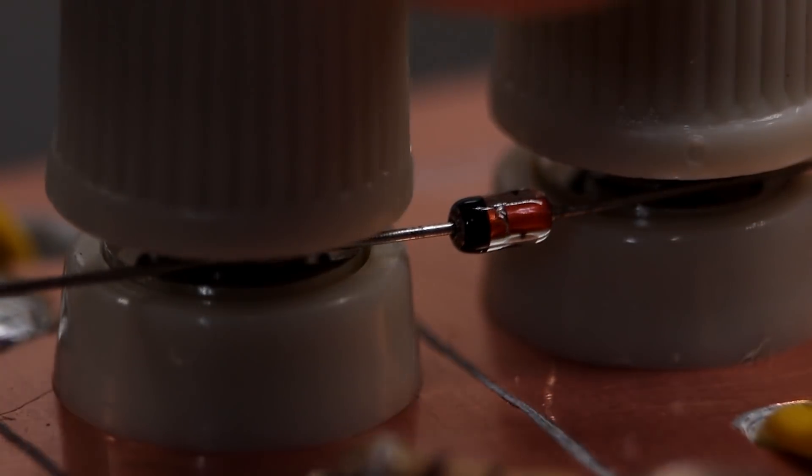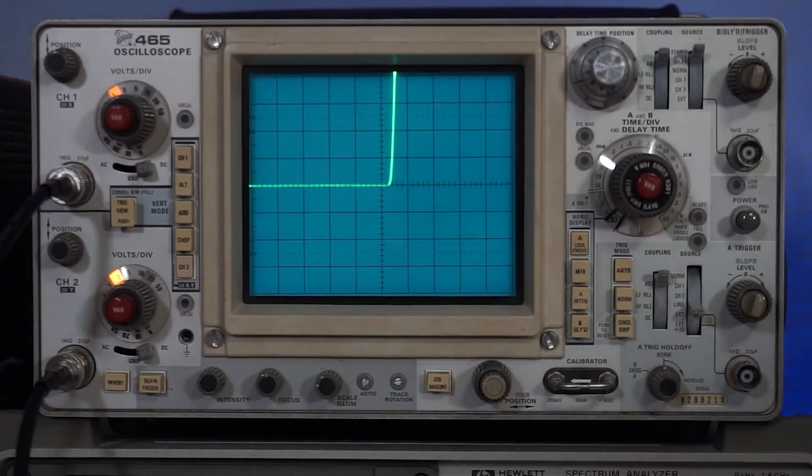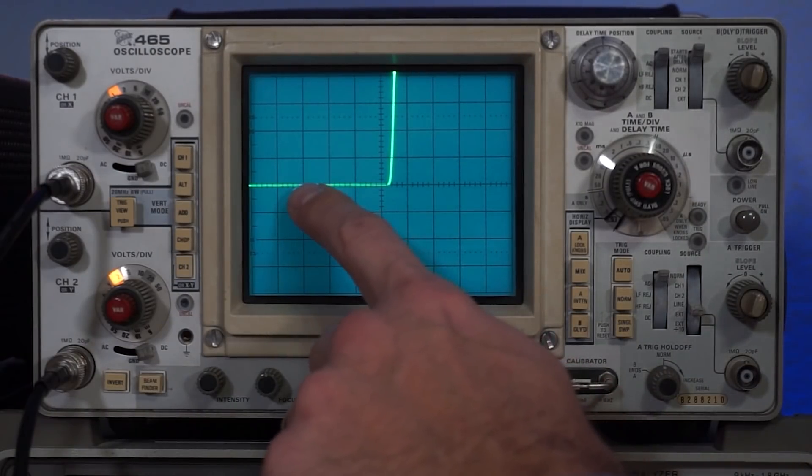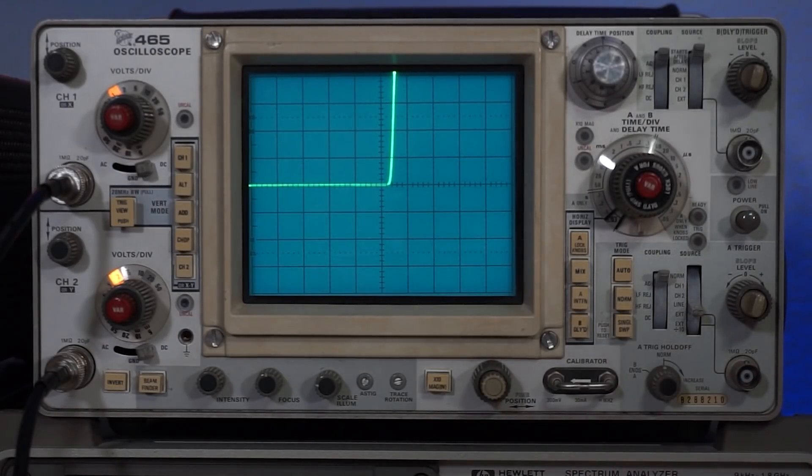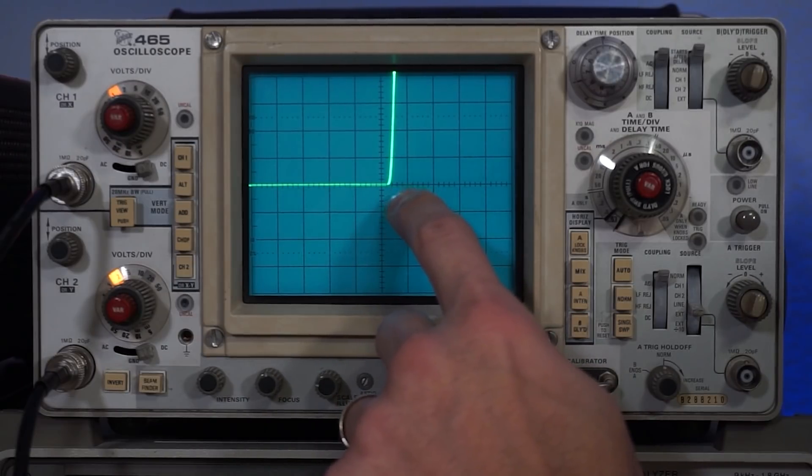So let me plug in a Jellybean 1N4148 small signal diode, and we can immediately see that as the voltage swings between plus and minus 9 volts, we don't actually start conducting until we hit about 0.7 volts as standard diodes like to do.